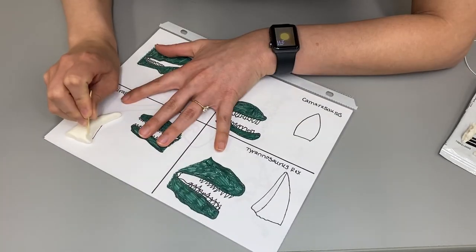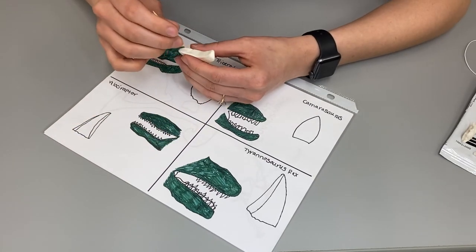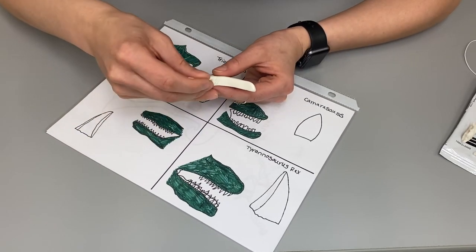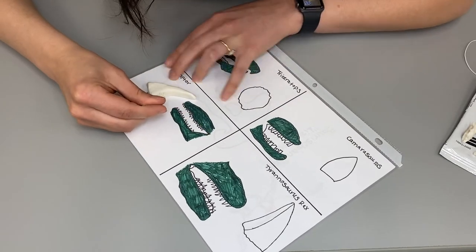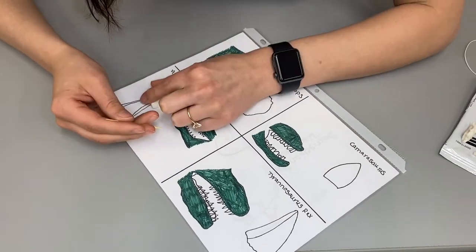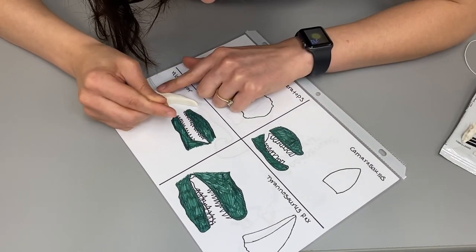I'm going to go ahead and do the Velociraptor next. For this one, you want to make sure to use the toothpick to create a serrated edge on the tooth, just as the Velociraptor would have had.